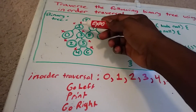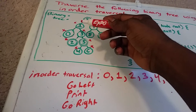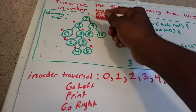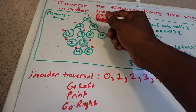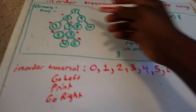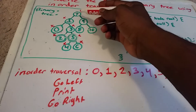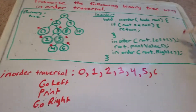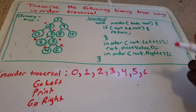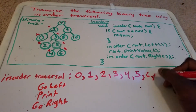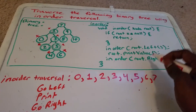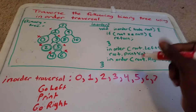We return back to 1, and then return all the way back to 7. We went as far left as possible on 7, so now we're going to print 7. And now we're going to go as far right as possible.